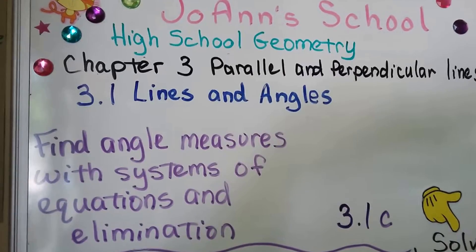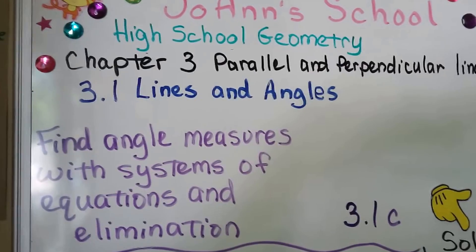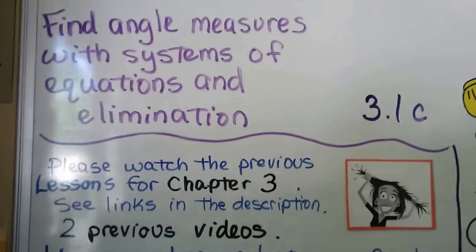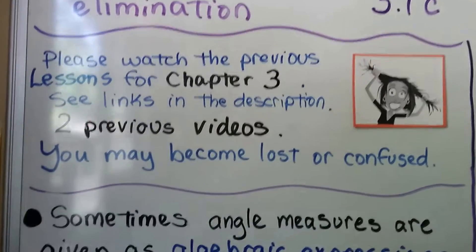This is our final video for Lesson 3.1. It's 3.1c. We're going to find angle measures with systems of equations and elimination. So that means we have two previous videos for this chapter that are linked in the description in the geometry playlist.